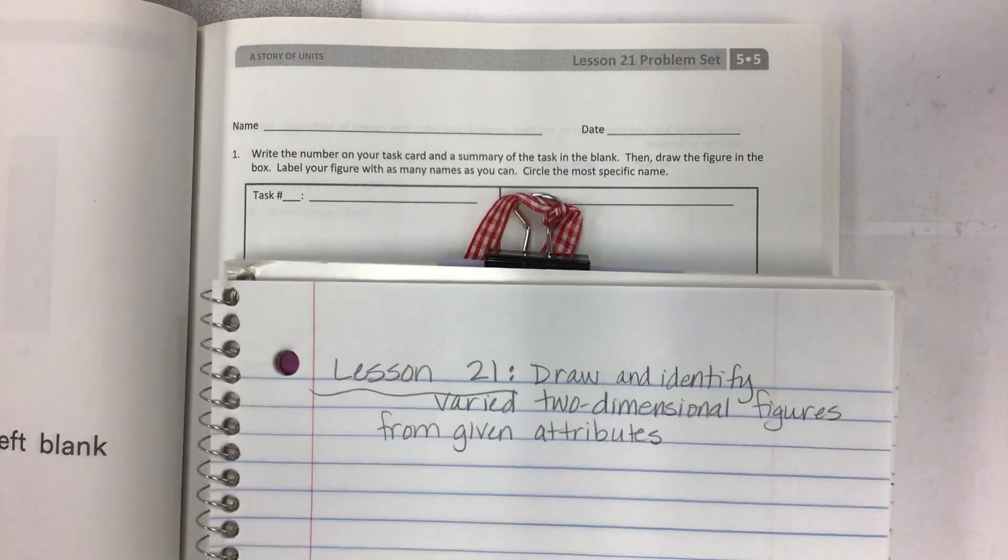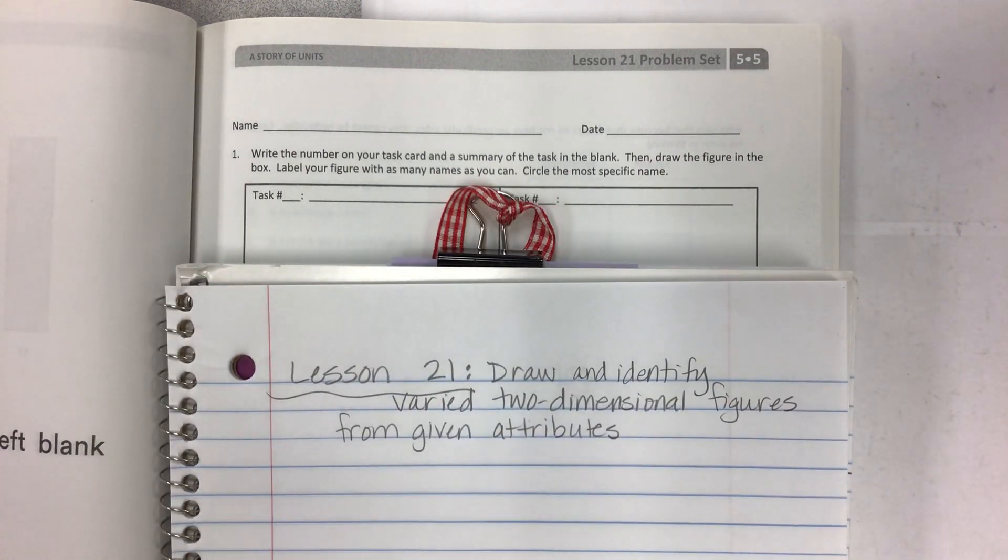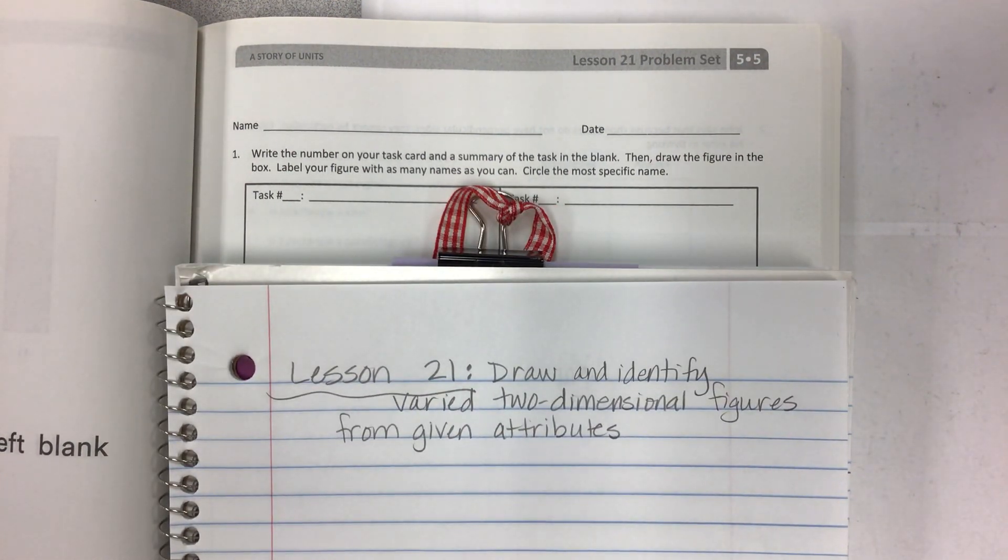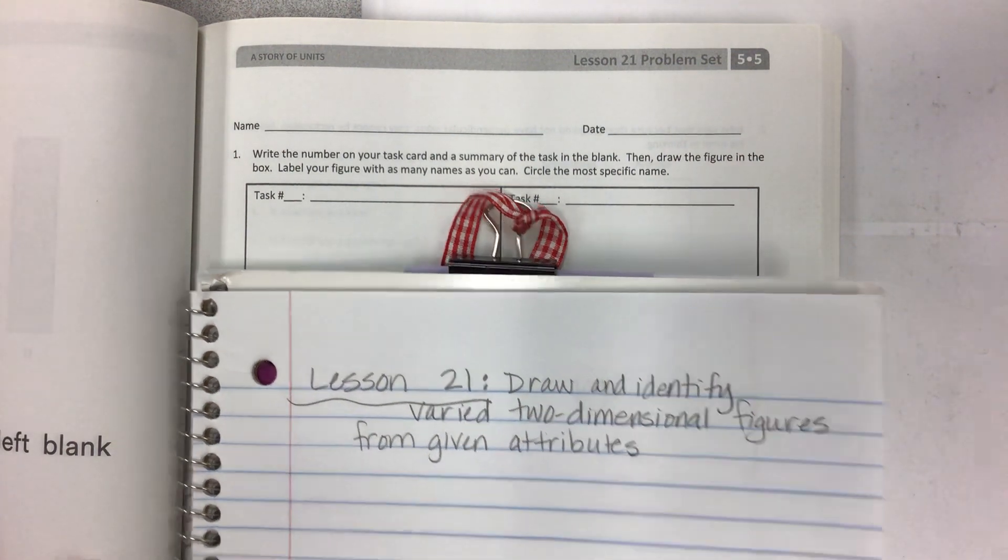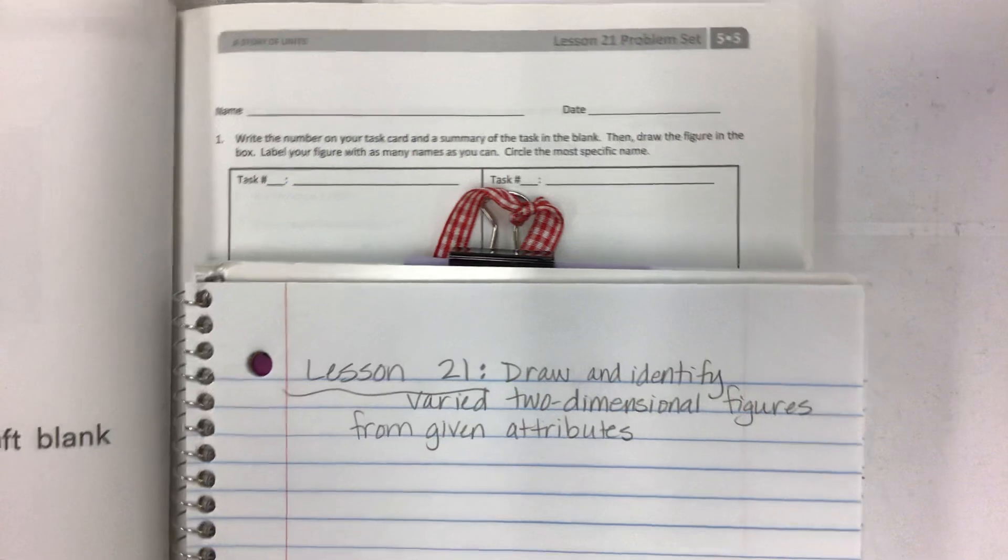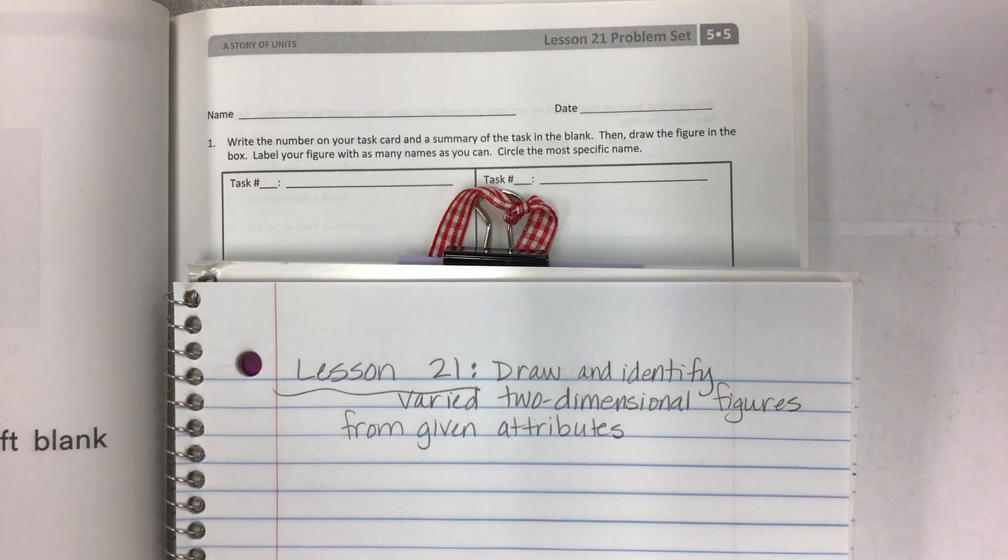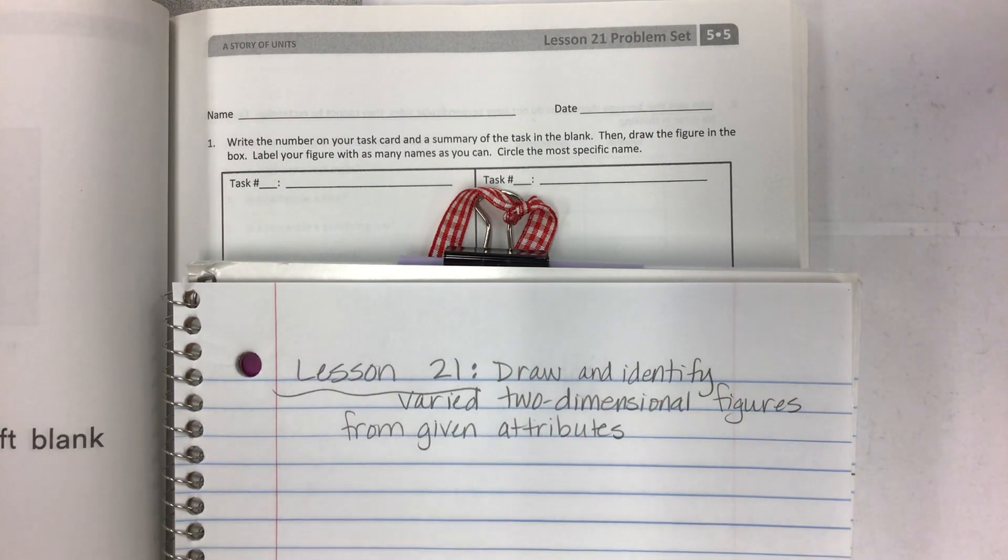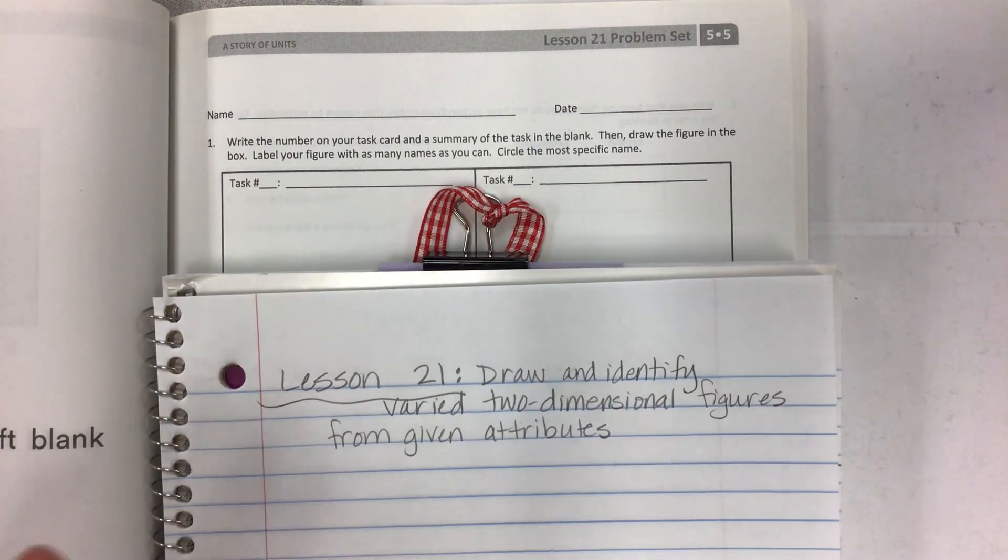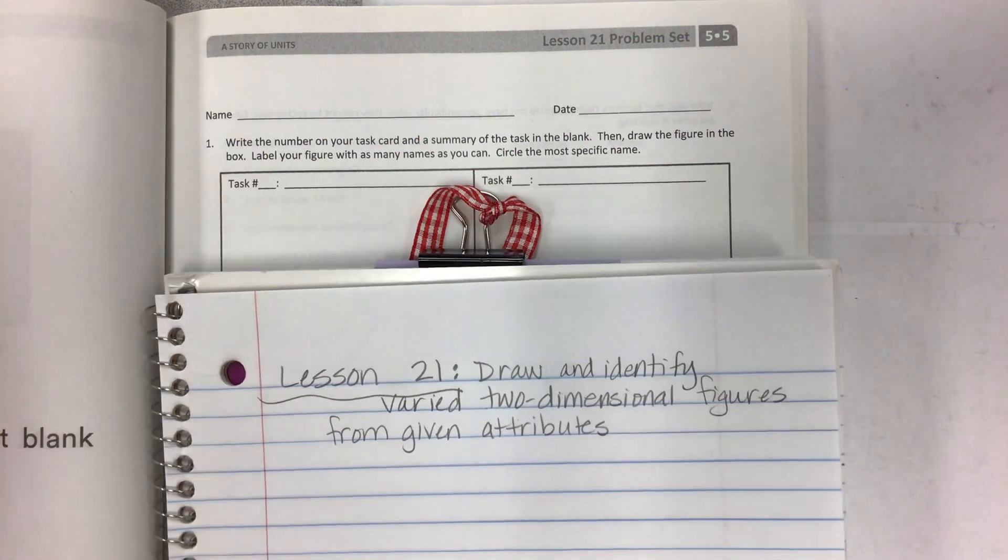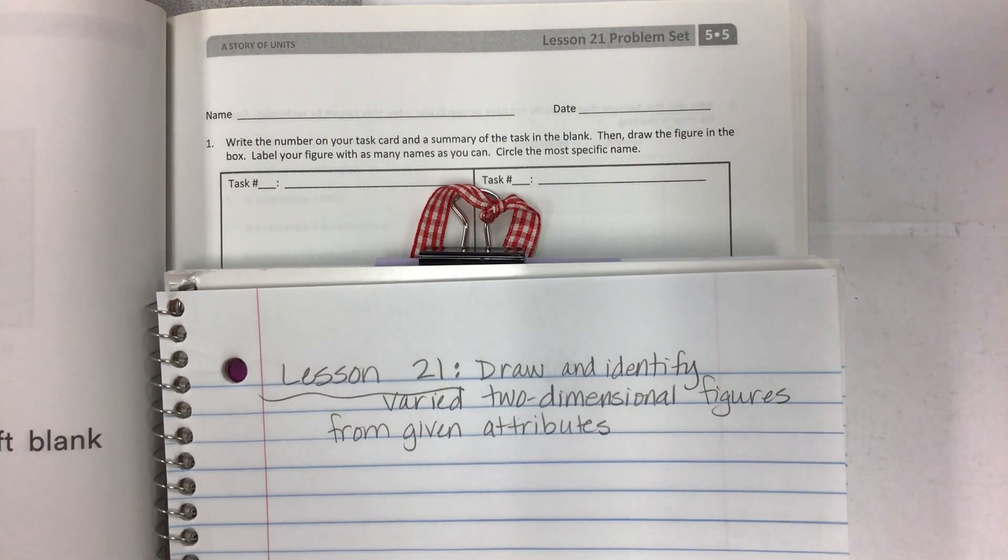I think there are like 24 task cards or something like that, and I just don't think I could make that in a video. So I'll go over a few of them, maybe the first six, and then I'll go over the answers on the back. The objective here in lesson 21 is really for you to practice drawing and then defining what those attributes would look like in a shape. So get your tools out and get ready to play around with your drawings.